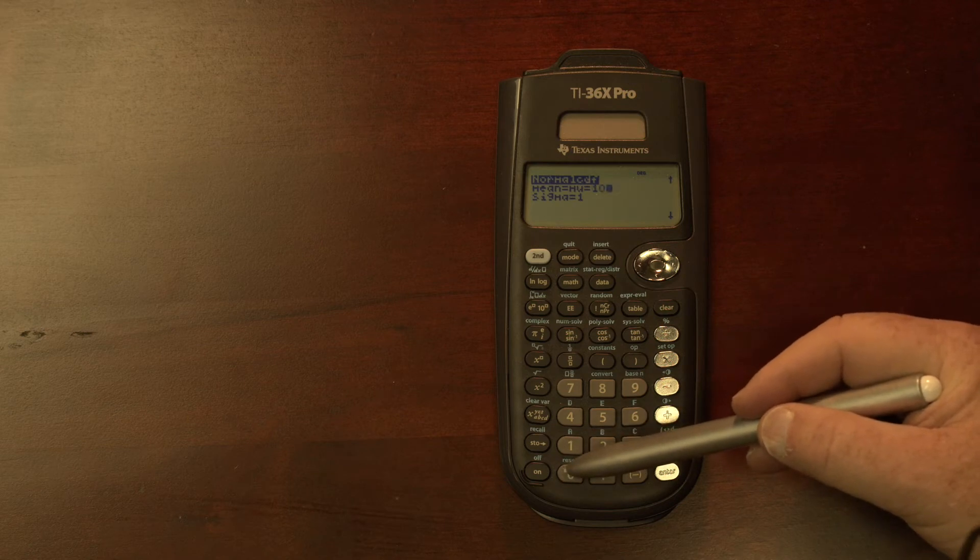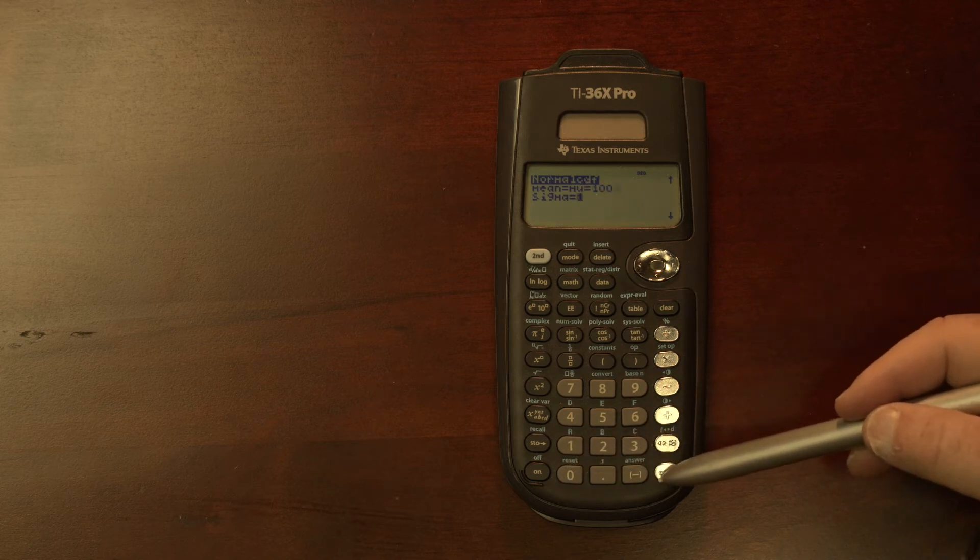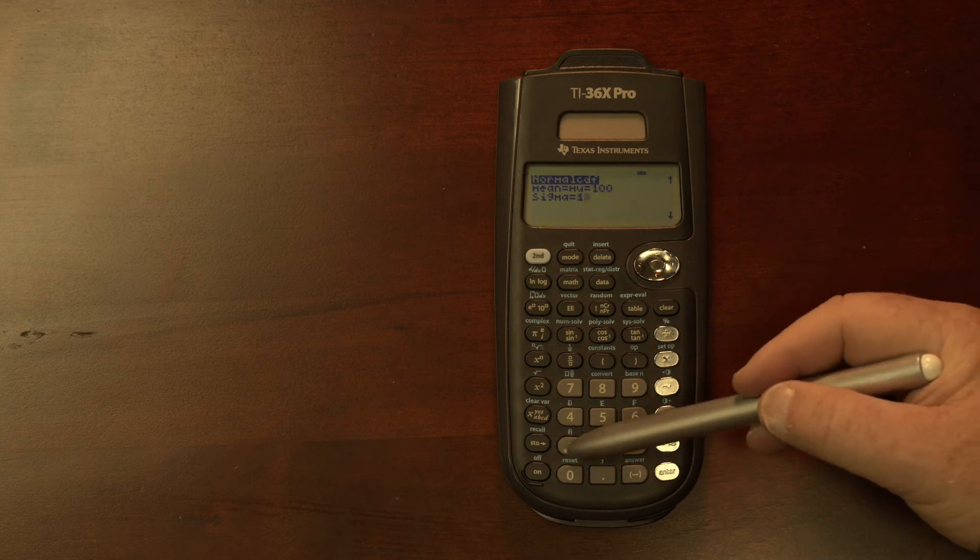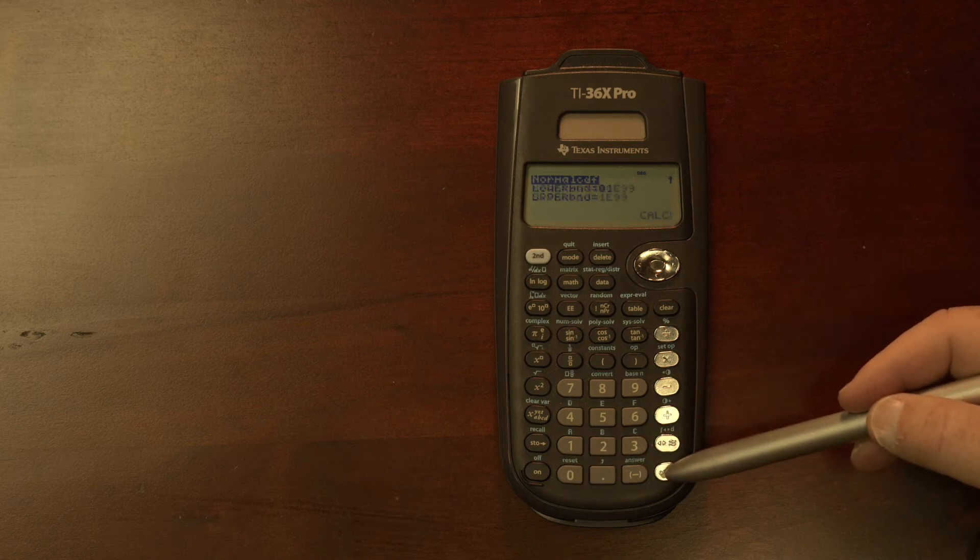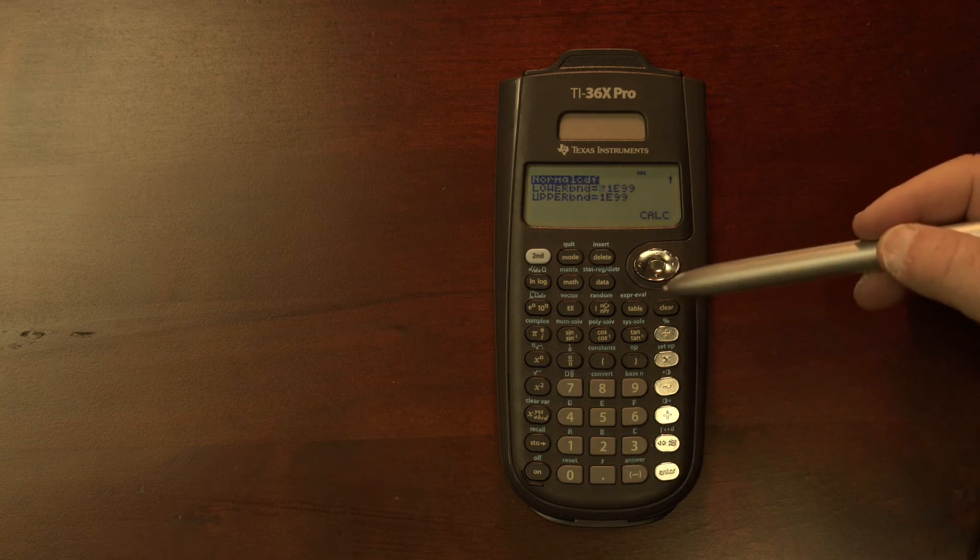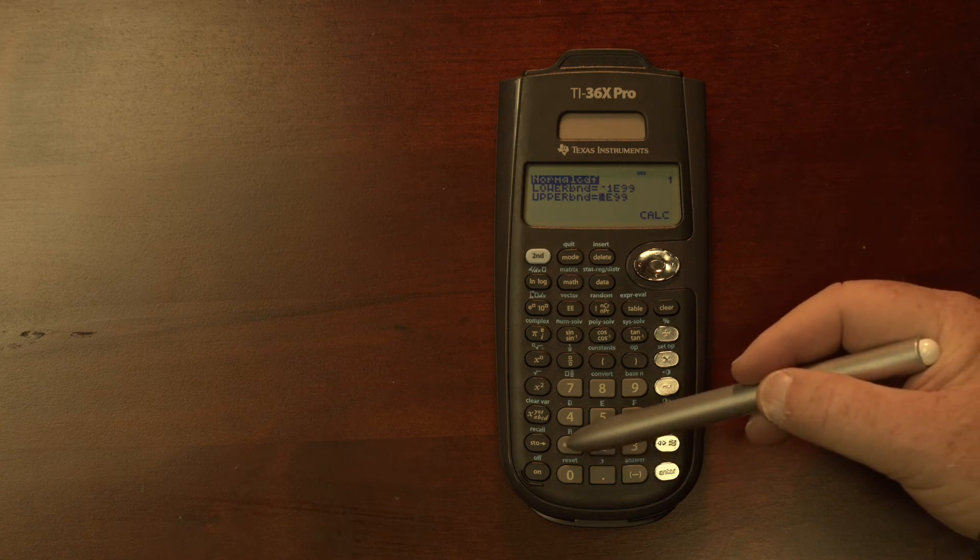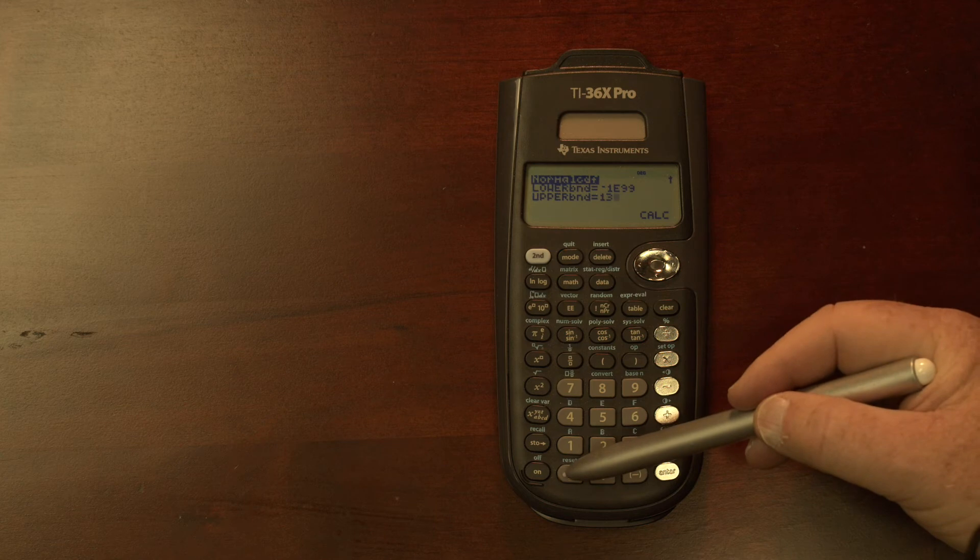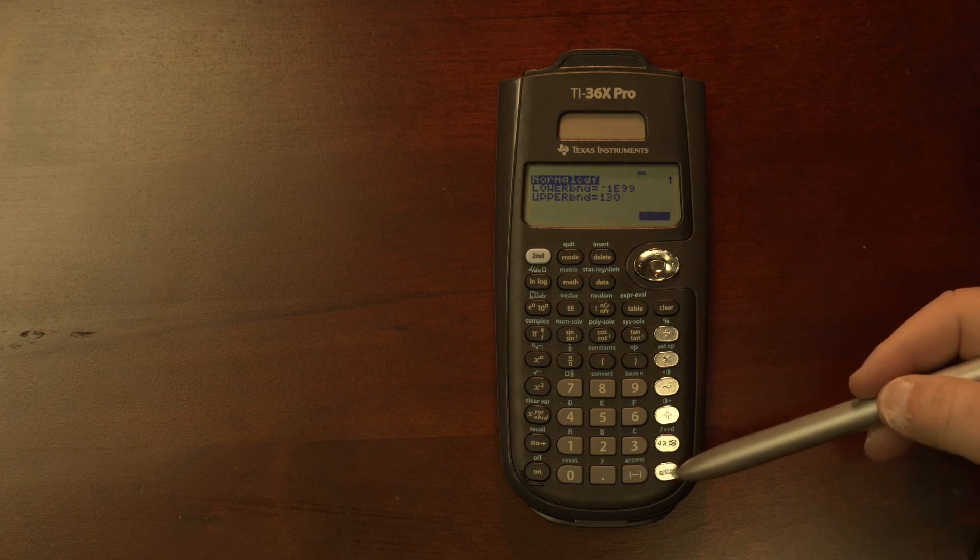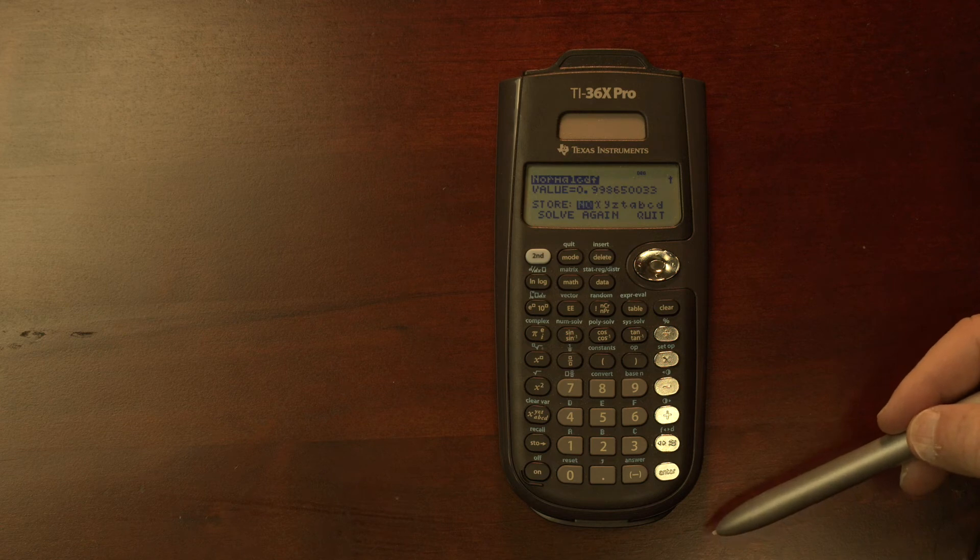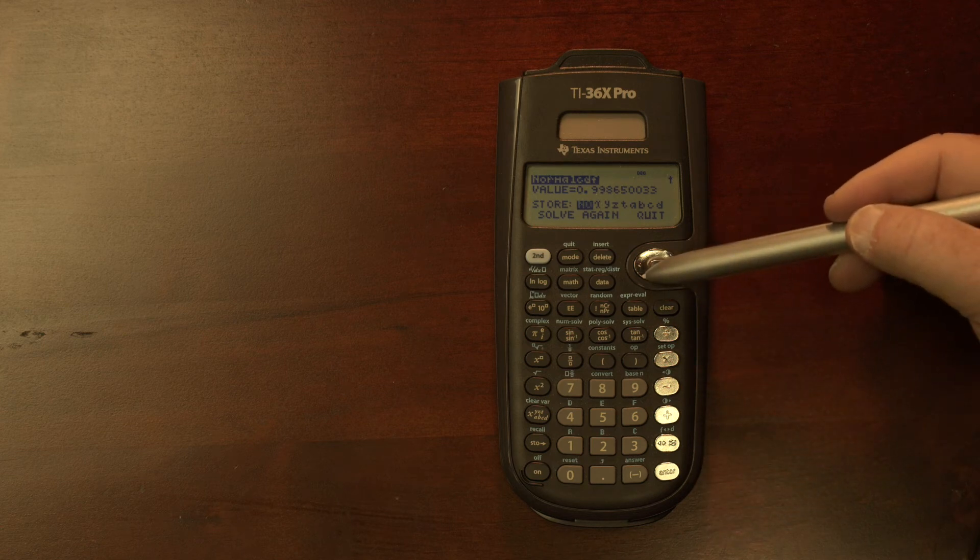Now we can enter in the mean value, 100, the sigma value for the population, 10. It then has already entered in basically a negative infinity for us. And then we put in the value that we are interested in, and in this case it is 130. Hit calculate, and it provides us with the information on what the cumulative value is for the probability.